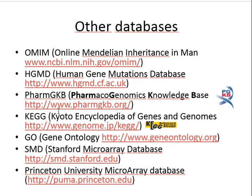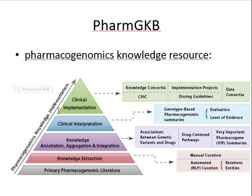There are also other databases about microarrays that will be another subject we will focus on later. PharmGKB may be considered an integrated database because it has integrated knowledge from primary pharmacogenomic literature all the way to clinical annotation. It has different levels of evidence for an association between a gene variant and drugs and the drug effect.